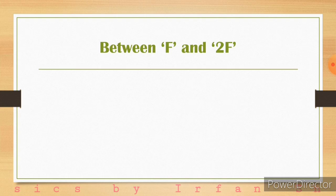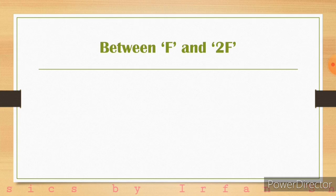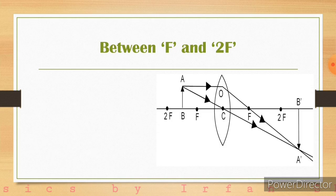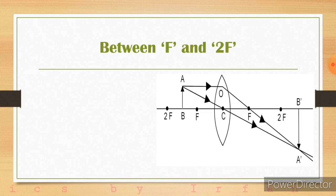Fourth case: when object is placed between focus and center of curvature, F and 2F. Here A and B indicate the object, located between focus and 2F. One light ray passes parallel to the principal axis and after refraction passes through the focus. Another light ray passes through the optic center and is undeviated. These two light rays intersect on the other side of the lens, where the image A'B' is found.